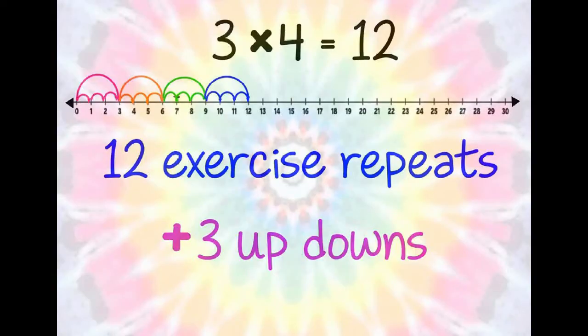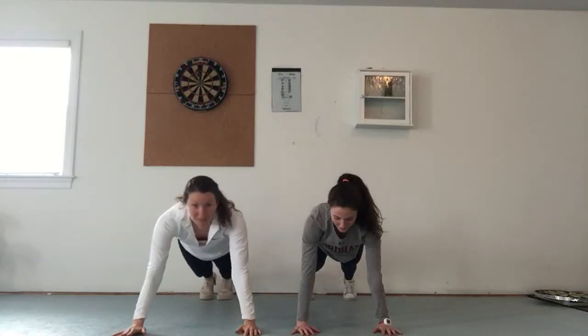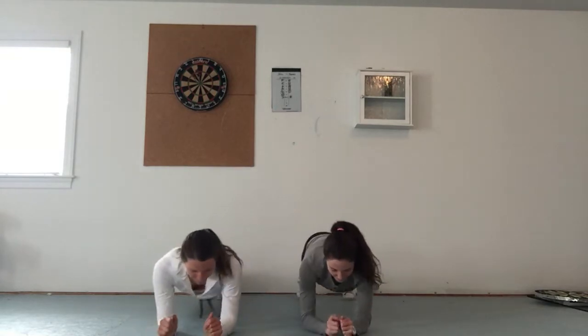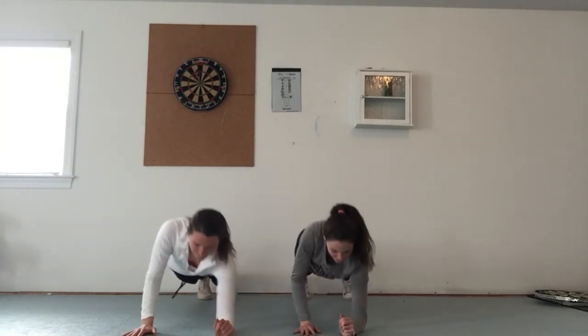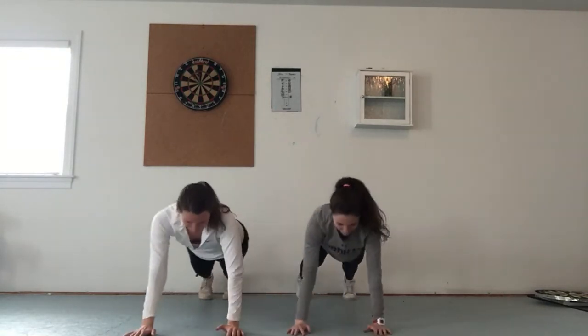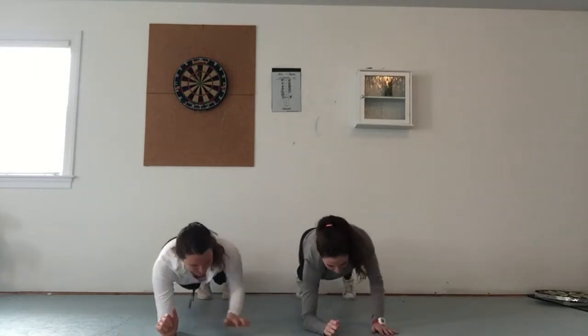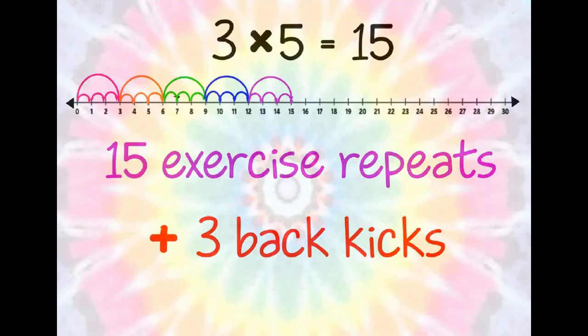3 times 4 is 12. We have completed 12 exercise repeats. Now we will add 3 up-downs. 3 times 5 is 15. We have completed 15 exercise repeats. Now we will add 3 back-kicks.